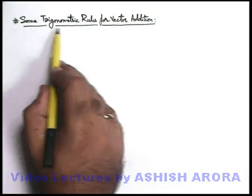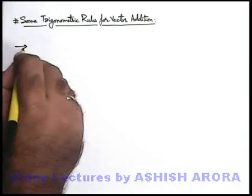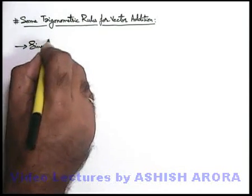Let's discuss some trigonometric rules used for vector addition. Mainly we are going to discuss two rules. The very first is sine rule.